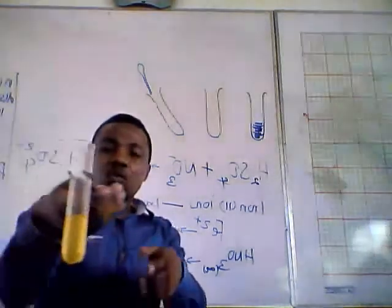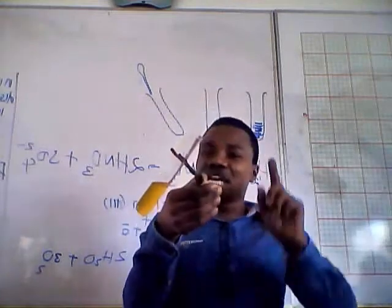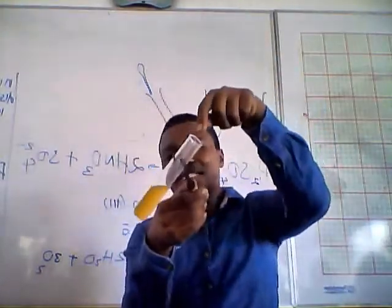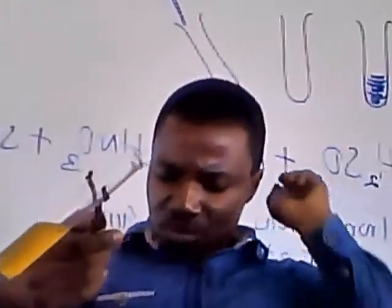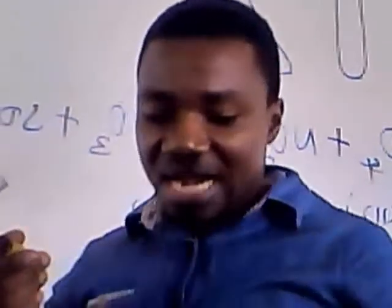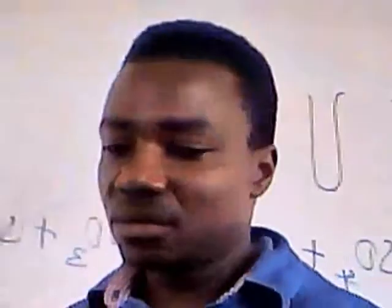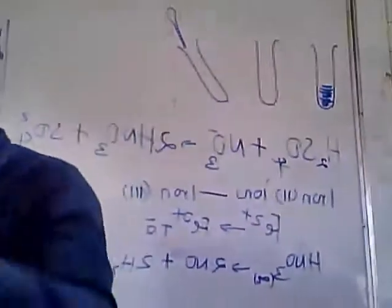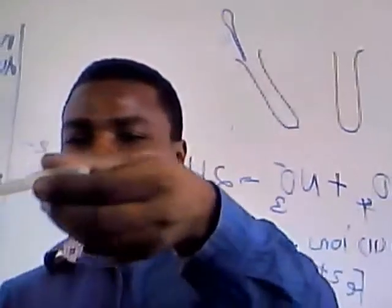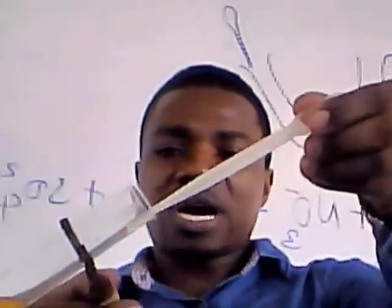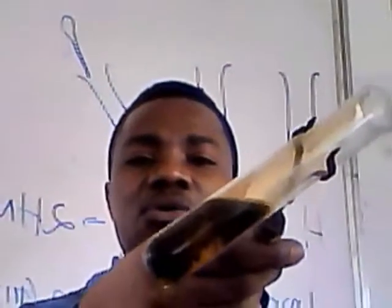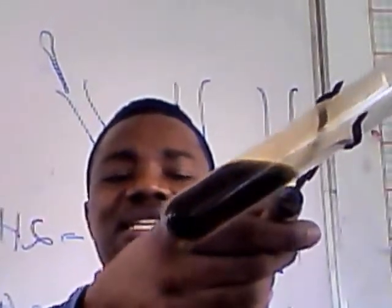Now, while it is slanting, you add sulfuric acid — not directly, but through the side. In a slanting position, carefully add concentrated sulfuric acid down the side. So I add the sulfuric acid down the side.